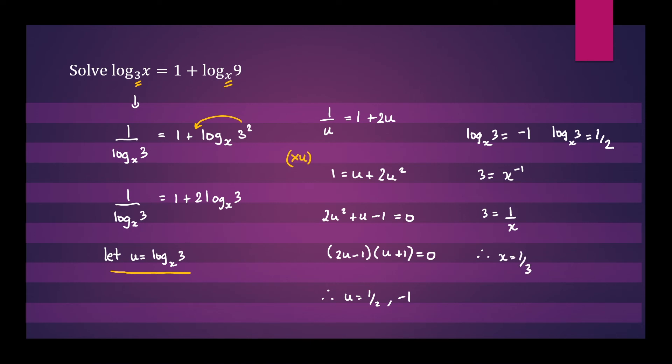In the second equation, the exponential form is 3 equals x to the half power. To find x, we'll square both sides. 2 times a half is 1. So x will equal 3 squared, which is 9.